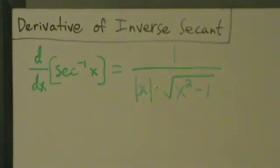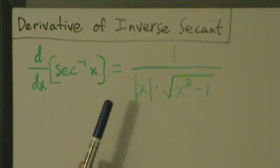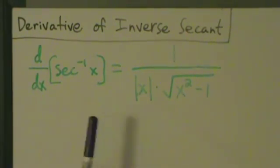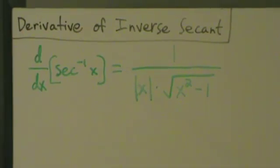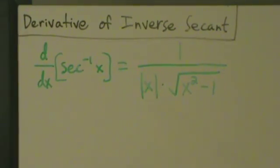This one's a little bit strange in that it has this absolute value in it. There are at least three different ways to prove this. One of them, we could do it like the way we proved the derivative of the inverse sine function, but that's going to be kind of complicated and messy. Another way is to use the chain rule, but we haven't talked about that yet. The third way is with some algebraic manipulations, so let's go ahead and do those.